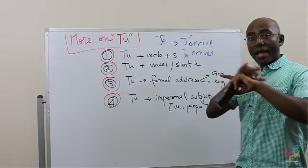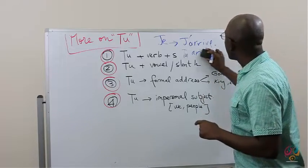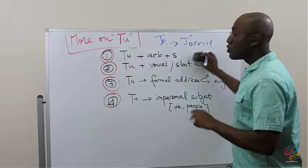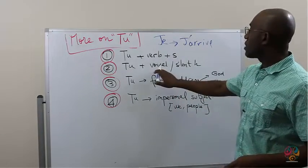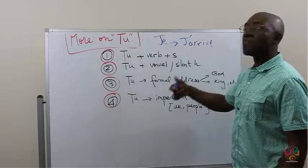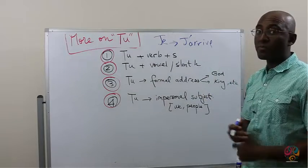So, use TU at all costs, anywhere, at any time, to be sure that you don't make any mistake. TU plus vowel stays the same. There is no T-apostrophe whatsoever.